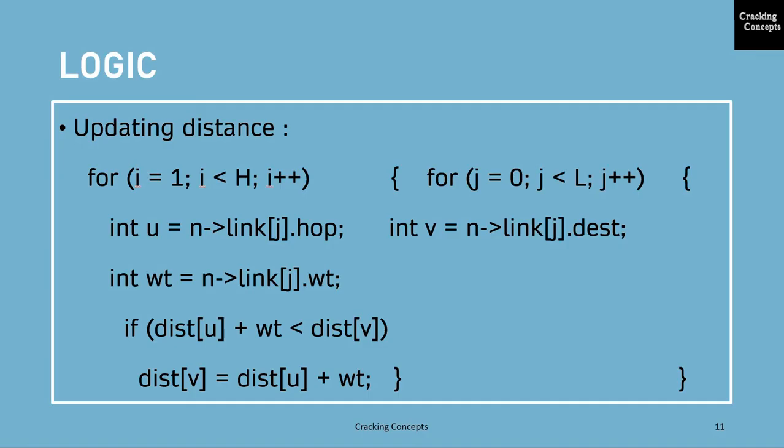Next step is the distance from that particular u, that is the hop, the starting point of that link, is added along with the weight. And what is checked here is, as we already said, there is a distance that is set. Initially we set it to a max value. Now this will be modified each time this loop runs.